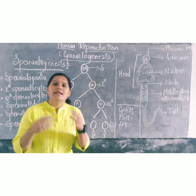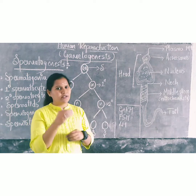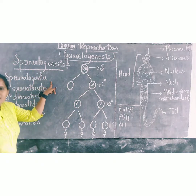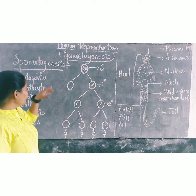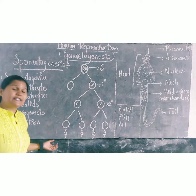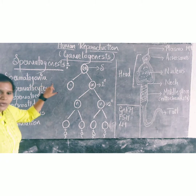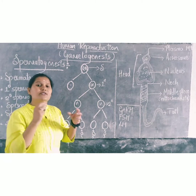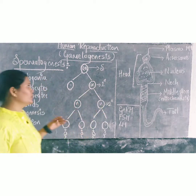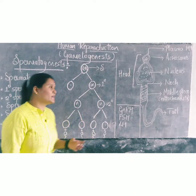We all know that spermatogonia are the main germ cells which are present in the seminiferous tubules, attached to the wall of the seminiferous tubules. So spermatogonia is a germ cell. When it transforms into the main gametes — that is sperms — this is called the gametes. These spermatogonia, which are germ cells present and attached to the wall of the seminiferous tubules, undergo mitotic division and form many primary spermatocytes.